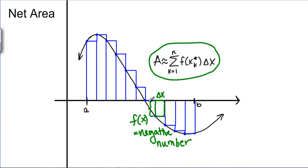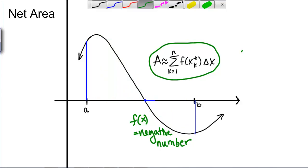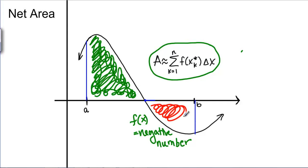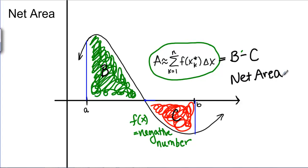What ends up happening is for this portion of the graph that's under the curve, we get negative the area that's there. The area up here is going to be positive, and the area that's below the X axis is going to be a negative number. If this is area B and this is area C, then when we calculate our Riemann sum, we're actually going to be calculating area B minus area C. We call this the net area because it's how much area you have left after you subtract any negative area.